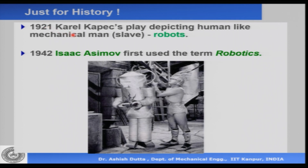In 1921, there were no robots, but it is interesting that he could imagine that in future there will be robots. In 1942, it was Isaac Asimov who first used the word robotics. Those interested in movies would know there are movies today — I, Robot and others. Isaac Asimov was the first person who used the word robotics and he also framed the three laws of robotics. Again, in 1942 there were no robots, but he could imagine what future robotics would be. He wrote a lot of science fiction, and interesting movies have been made from it, projecting what things like robotics and AI would be 100 years from now.